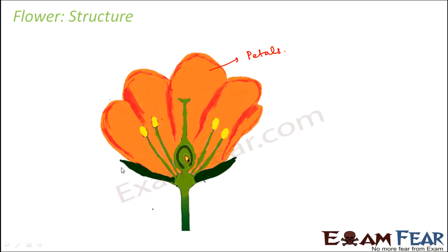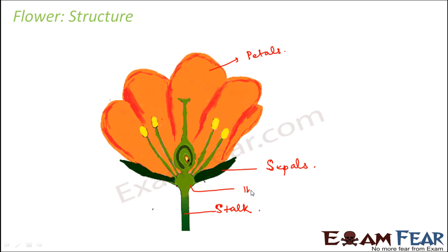Just below the petals you would see small leaf-like structures which are green in color — these are known as sepals. There is a stalk which holds the flower, also known as the pedicel. This stalk terminates into a swollen structure known as the thalamus.